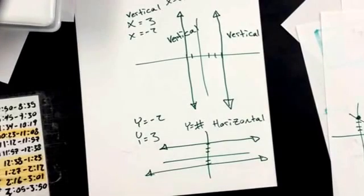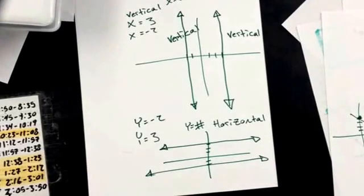And that's how you can tell. If it says x equals, it's vertical. If it says y equals, it's horizontal. And that's it.